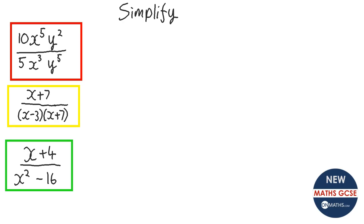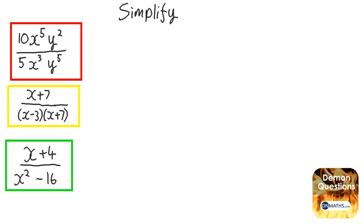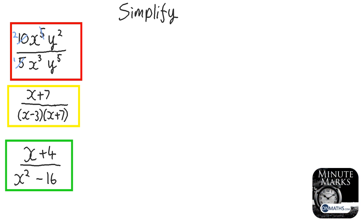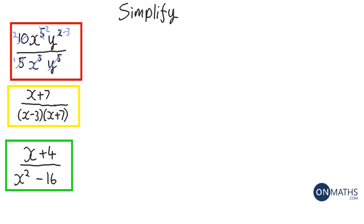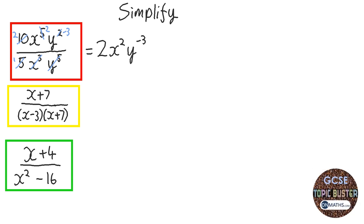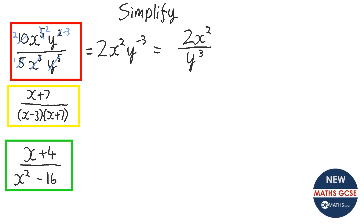Pause the video and have a go. So let's do the first one: 10 and 5, I can divide them both by 5. x to the power of 5 and x to the power of 3 — I can divide them both by x to the power of 3, so that leaves 2. When I divide with indices, I take away the powers, so I can divide by y to the power of 5, which leaves minus 3. So the answer is 2x squared y to the power of minus 3, or equivalently 2x squared over y to the power of 3 — both will give you the mark.